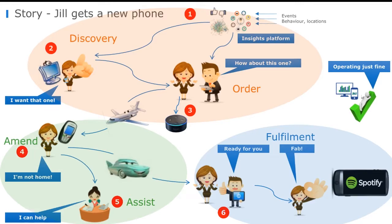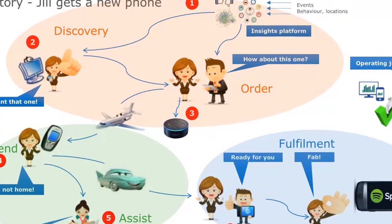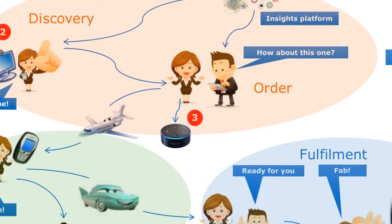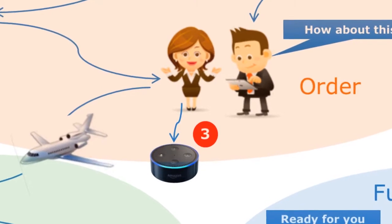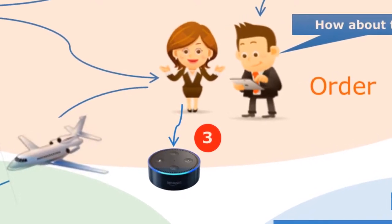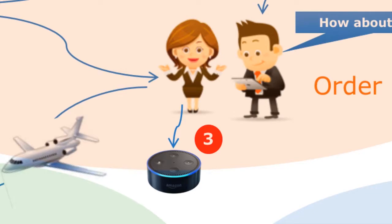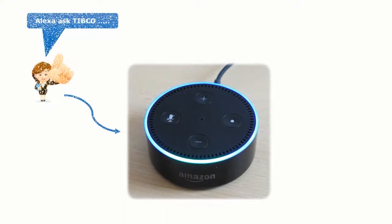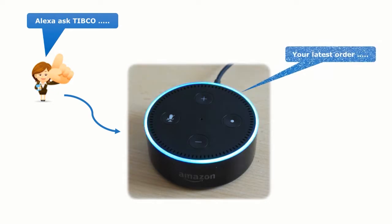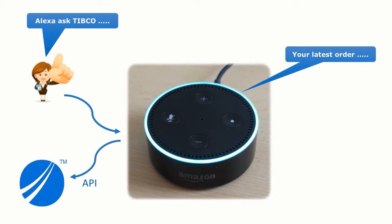Jill wants to check the status of her order. Using the APIs provided by the TIPCO platform, the operator has been able to easily create an application so that Jill can check her order status using her favorite IoT device. Eager to know, she simply asks her Amazon Echo: "Alexa, ask TIPCO for latest orders please." Alexa responds: "Sure, let me check your latest order by calling the relevant APIs."